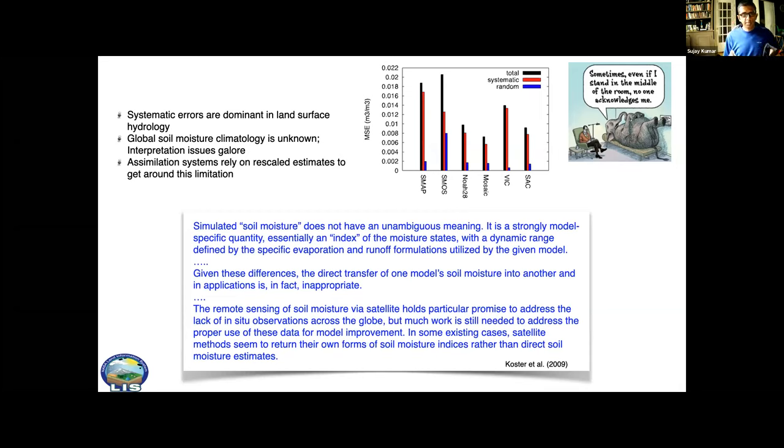The lack of soil moisture climatology is again well established. Randy Koster really defined this very clearly that the simulated soil moisture or even the retrievals are not really soil moisture, they are just an index of wetness. That's why we can't really assimilate them directly. One solution is to actually work towards improving that observability which hasn't happened.